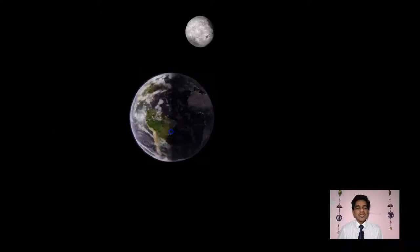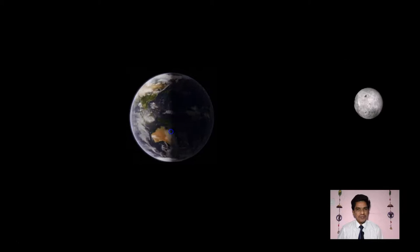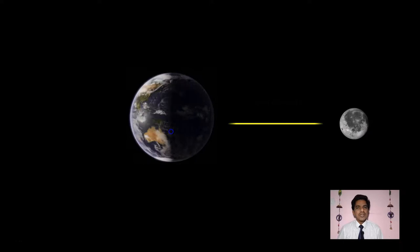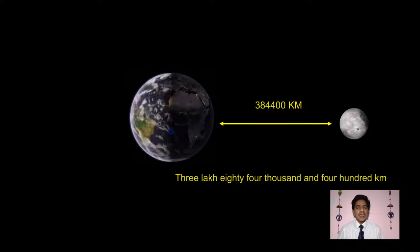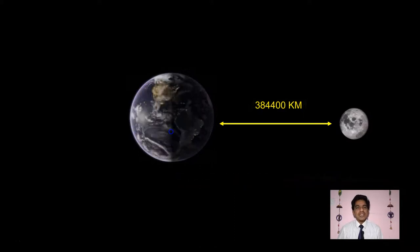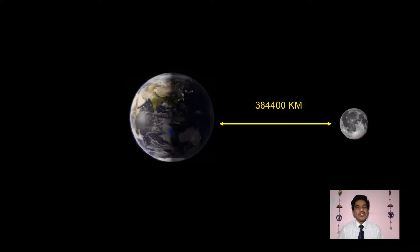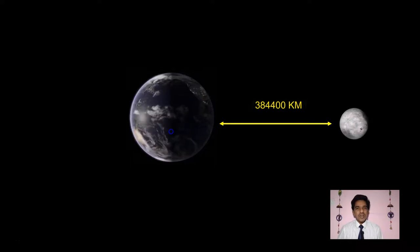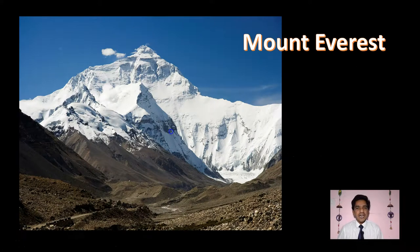Now have a look at this situation. We know that the moon revolves around the earth. Can you tell me the distance between the moon and the earth? It's actually 2,84,400 kilometers. Now, can we use a regular instrument to measure that? Similarly, we know the highest peak in the world is Mount Everest, and its height is 8,848 meters.